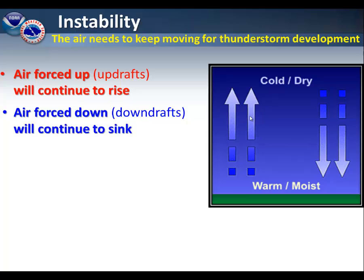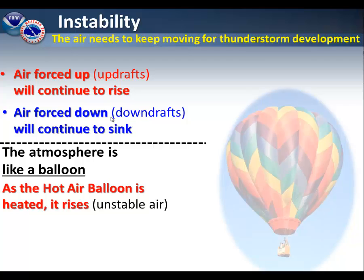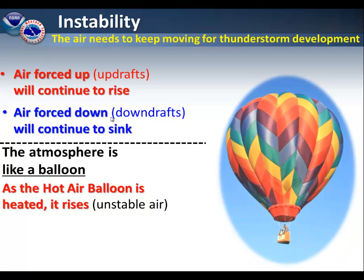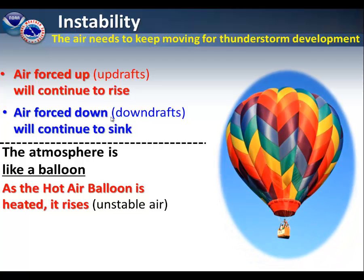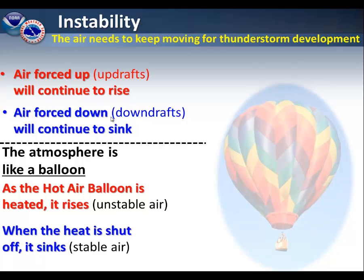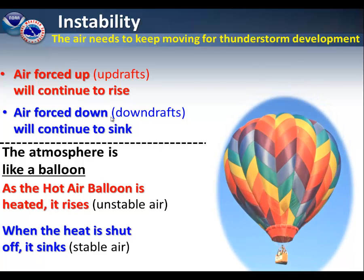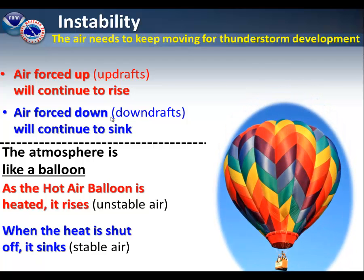We also need a way to keep the air moving after the thunderstorms form — this is called instability. Air forced upwards, what we call an updraft, will continue to rise. And air forced downward, or what we call a downdraft, will continue to sink. Think of it like a hot air balloon: as the hot air balloon is heated, it rises because the air inside of it is unstable. However, when the heat is turned off, it starts to sink again because the air is becoming stable.